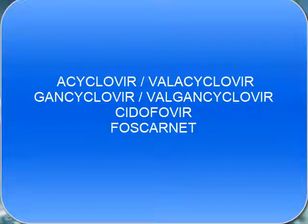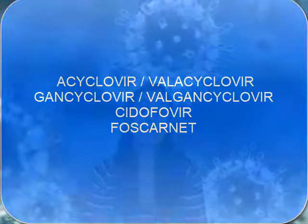Foscarnet is also used for other diseases like AIDS, but it's really toxic because it's extremely specific. Foscarnet is a bisphosphate analogue. As you know, we have a lot of bisphosphate in our cells because it's really important for a lot of metabolic events.